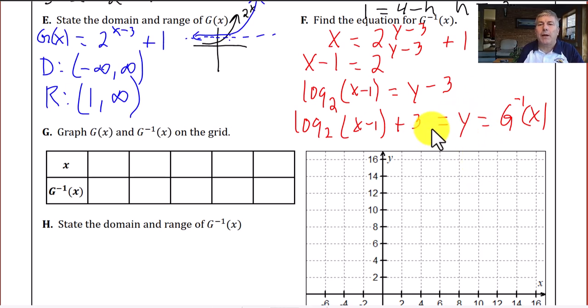In a quick comparison of our transformations, we see our original function was shifted 3 units to the right and up 1, or our x's changed 3 and our y's changed 1. Now, in the inverse, our y's shifted up 3, and our x's shifted to the right 1. So again, the flipping of the x's and y's in the inverse function.